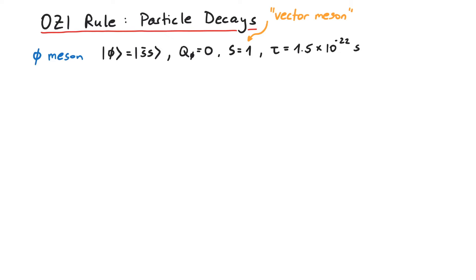Let us consider two of such possible decay products. First, one possibility is that the phi meson decays into two kaons, one K plus and one K minus. From the quark content, we see that we are creating an up-anti-up pair in this reaction.